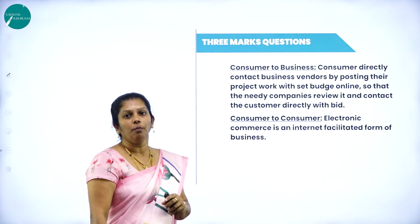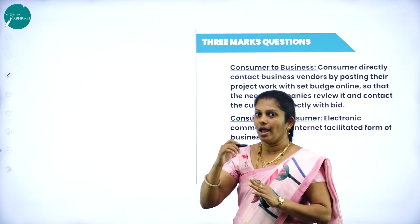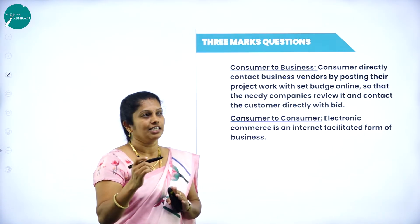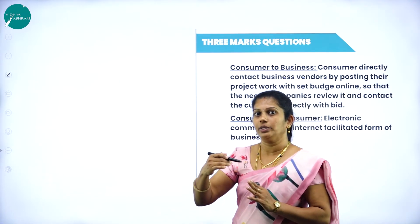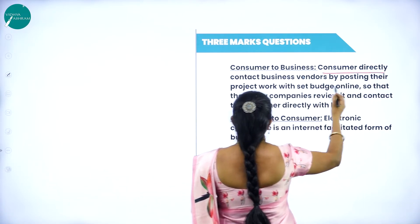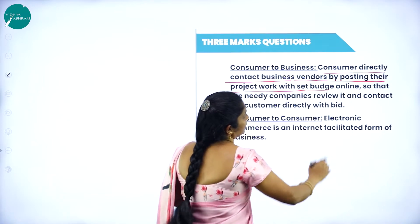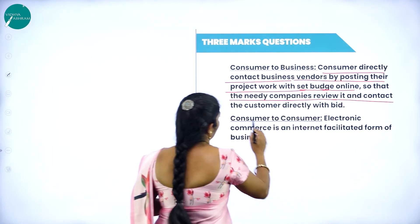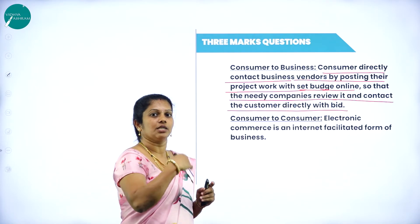Next, consumer to business. For example, consider I created and developed a project, launched it on the internet, and whoever bids the highest amount gets to buy it — that is consumer to business. The consumer launches or demands the product, and whoever gives the highest price gets it. The consumer directly contacts business vendors by posting their project work within a set budget online, and the interested companies review it and contact the customer directly with a bid.